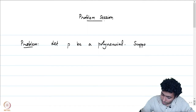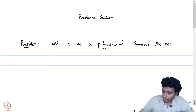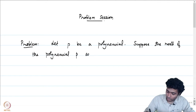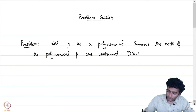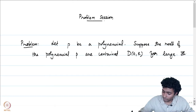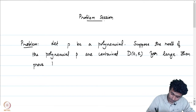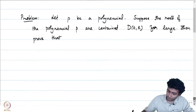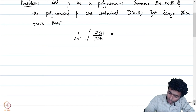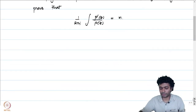Let us assume that all the roots of this polynomial are contained in a disk of radius r around 0. The roots of the polynomial p are contained in D(0, r) for r large. Then the integral (1/2πi) times the integral of p'(z)/p(z) is equal to n.